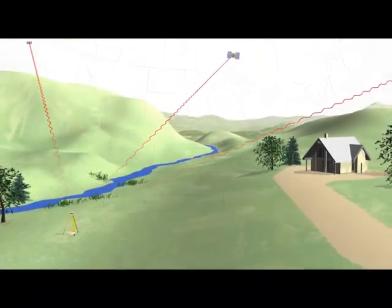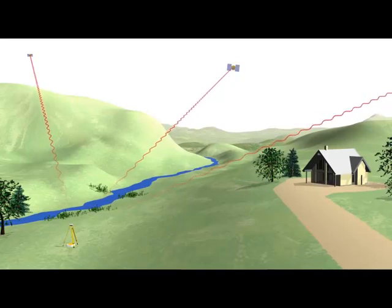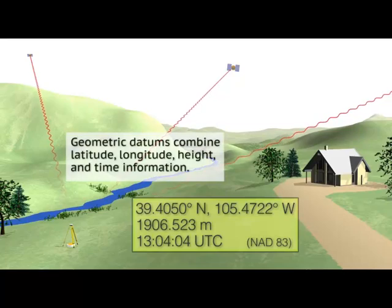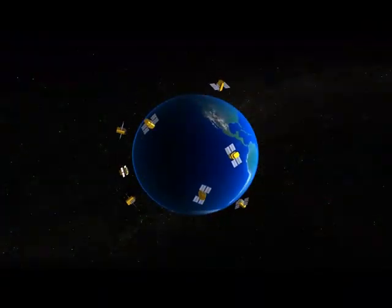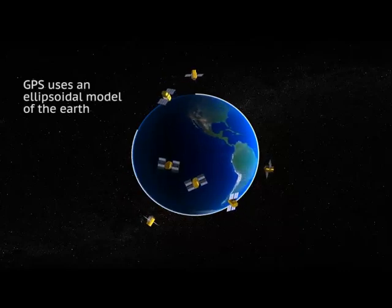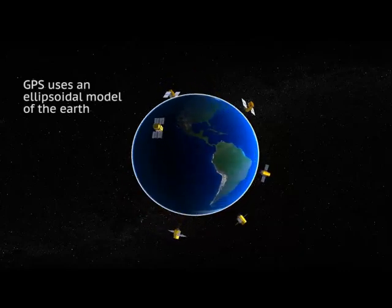Now, thanks to the Global Positioning System, commonly known as GPS, and some other space-age techniques, we are no longer limited to separate horizontal and vertical datums. Today we have access to geometric datums, which combine latitude, longitude, height, and time information. The height information derived from GPS is relative to something called an ellipsoidal model of the Earth, instead of to sea level.